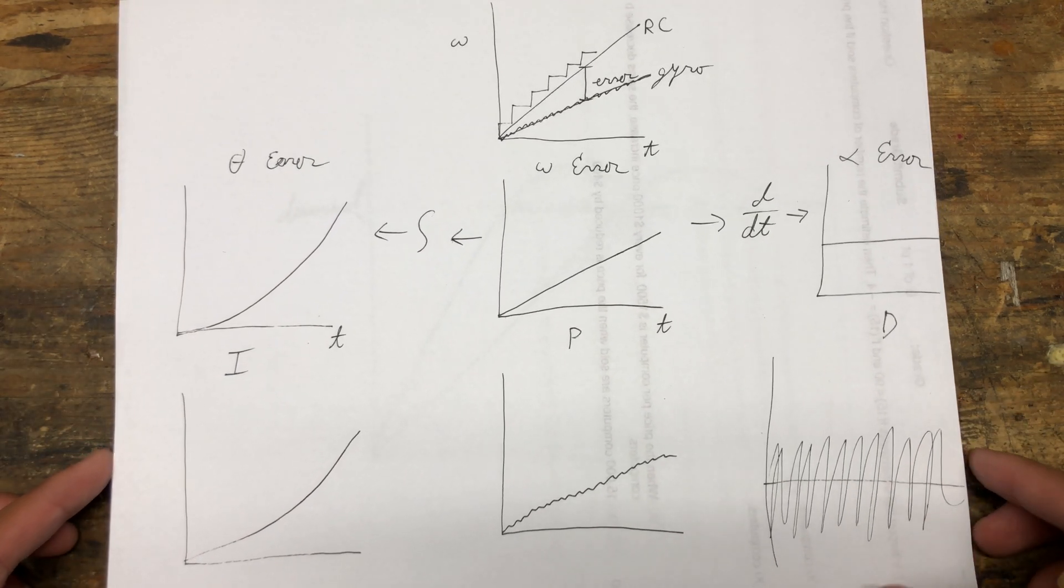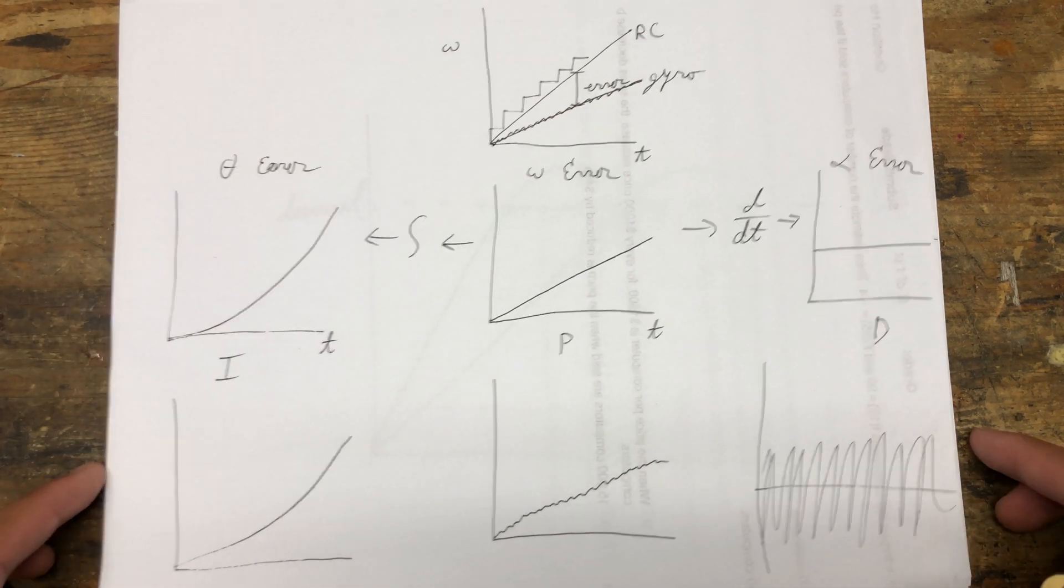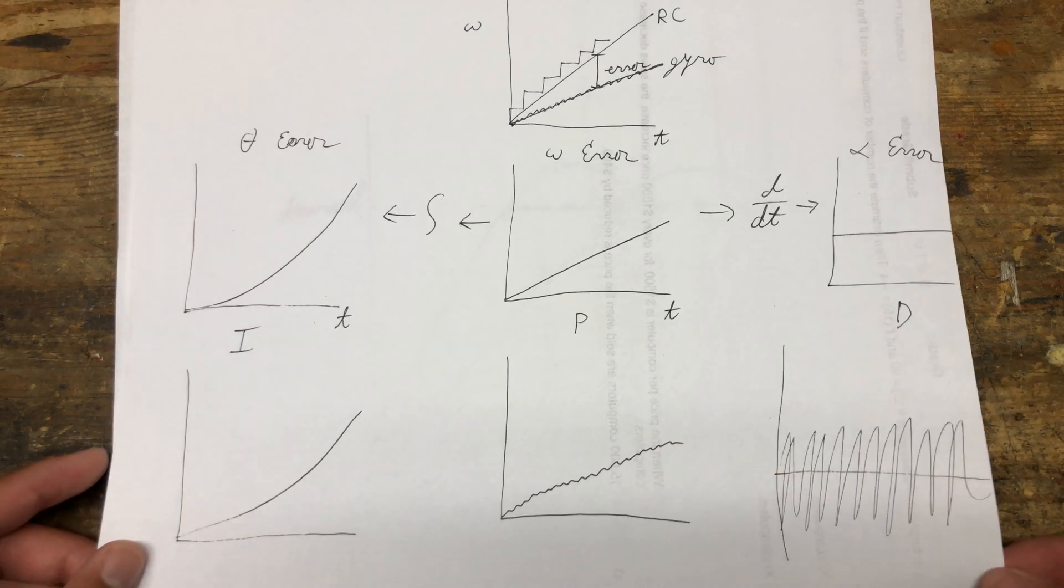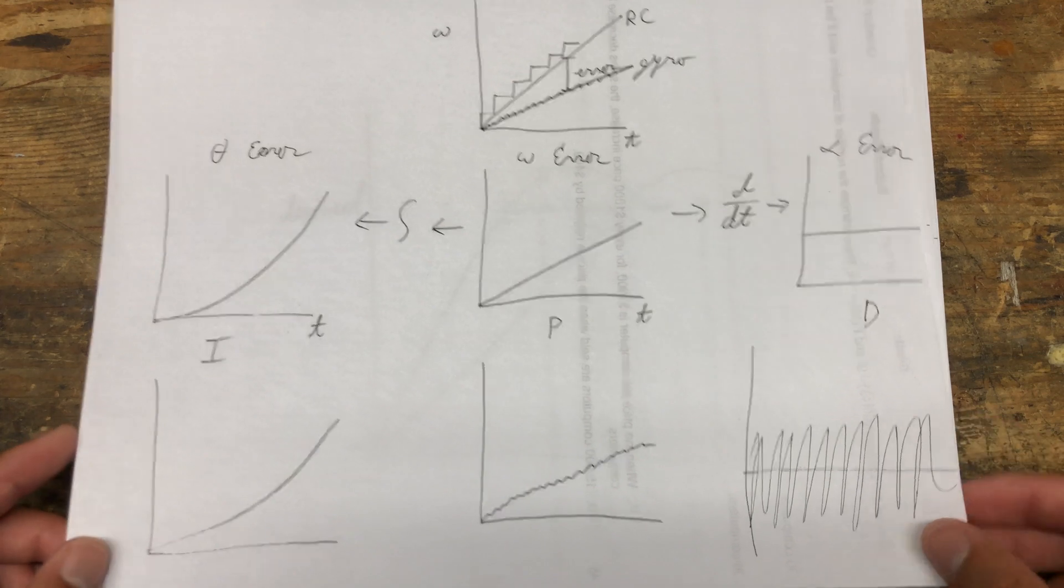That's why whenever you increase the D-gain, you want to be checking for hot motors and noise in the system, essentially, because of that noise amplification. You generally want to be running the highest D-gain possible without smoking your motors.